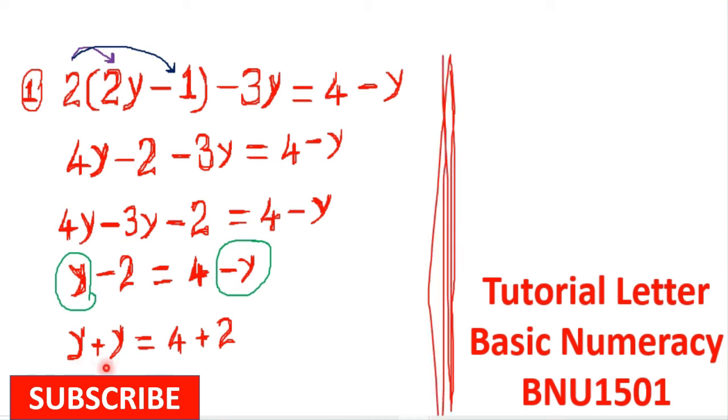From there, I can see that this y and this y become 2y. So we will have 2y, and 4 + 2 becomes 6. In other words, we will have 2y = 6.